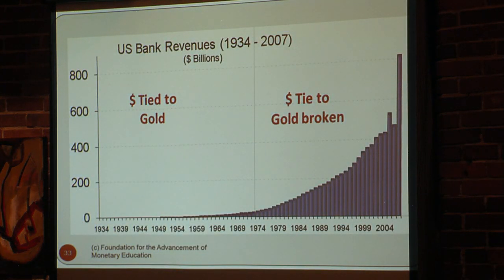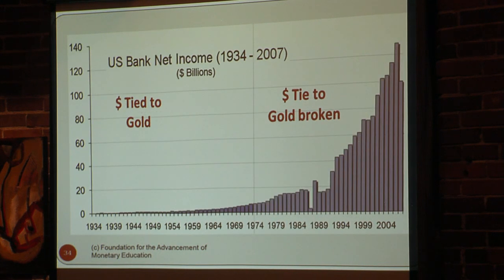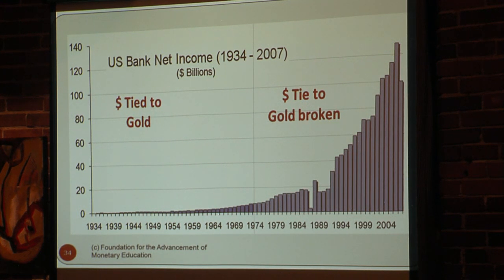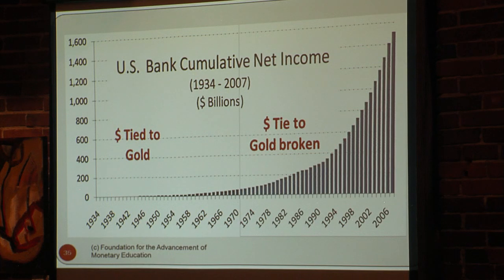The principal beneficiaries are Wall Street. Look at what happened to bank revenues after the last tie to gold was broken — they went into the stratosphere. Roughly half of bank revenues go to compensation. Their net income peaked at something like 130 billion dollars. Just to give you a reference point, the car industry at one point was doing around 100 billion dollars, but from the car industry we got 20 million cars. What do we get from the banks? Cancelled checks and bank statements. Their cumulative net income is something like 1.5 trillion dollars, and roughly 90 percent of that came after the last tie to gold was broken.